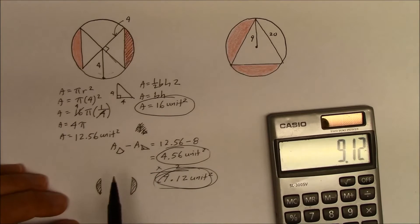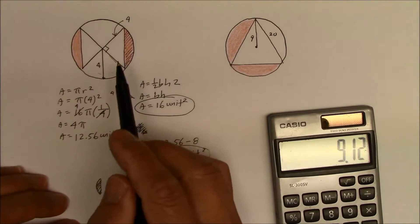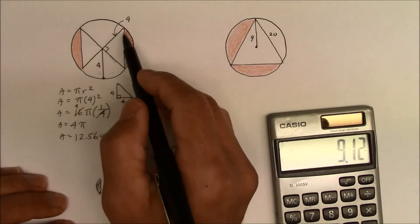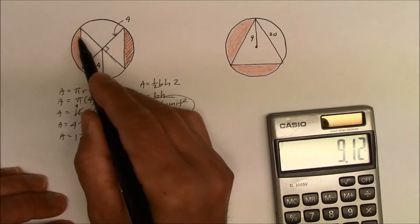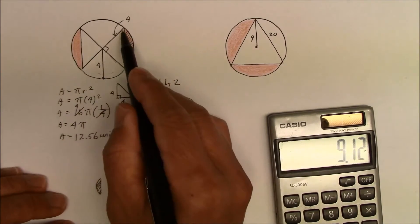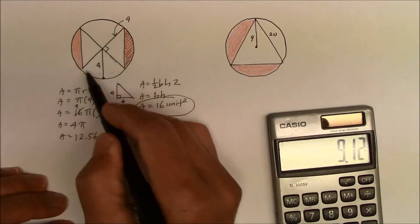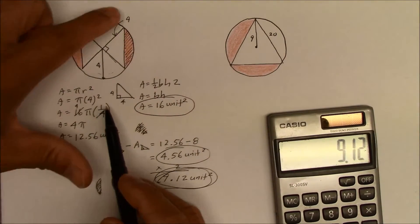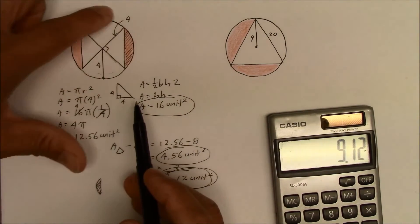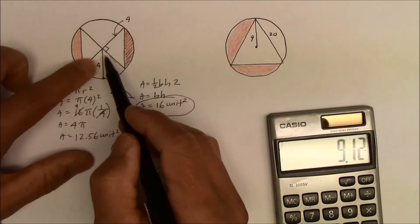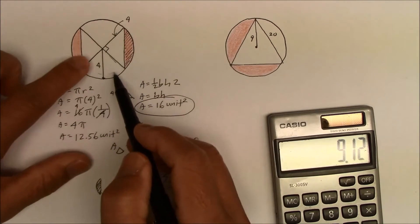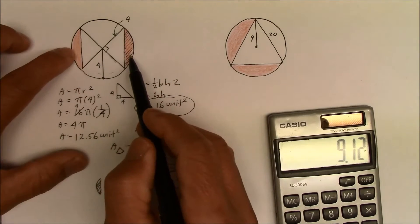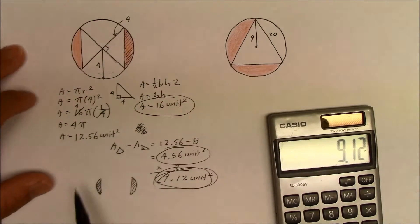The overall concept of finding the shaded region is that there is a polygon inscribed inside a circle. So all we have to do is find the area of the circle, take away the polygon, and divide whatever section remains for that little portion.